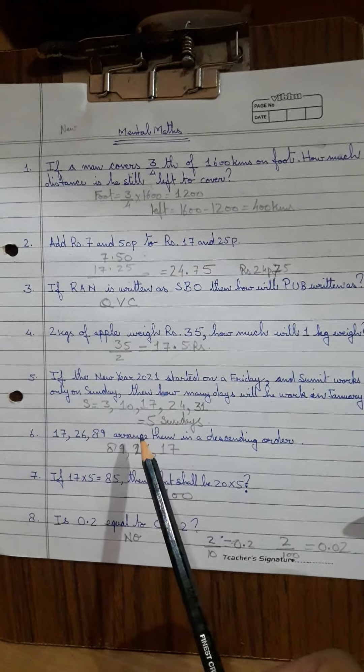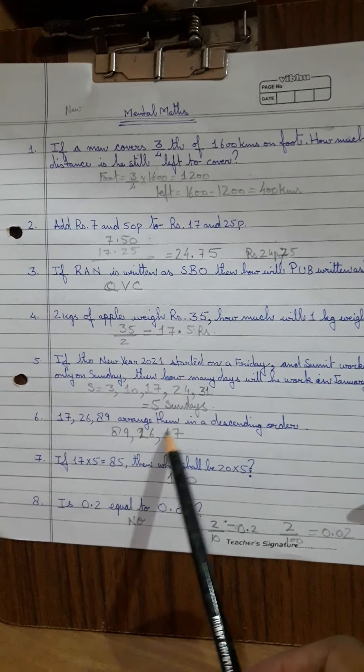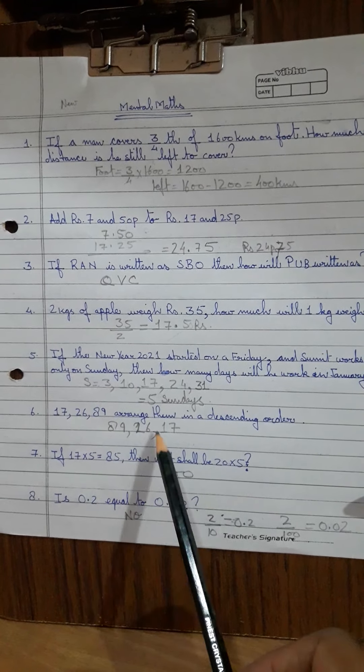Arranging them in a descending order, starting from the biggest, 89, 26, 17 is your answer, 89, 26, 17.